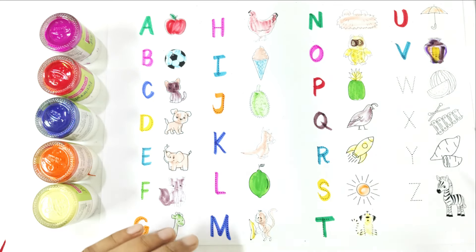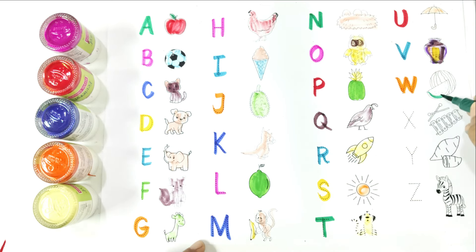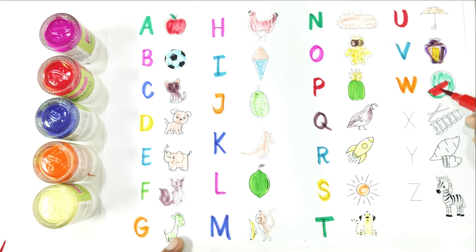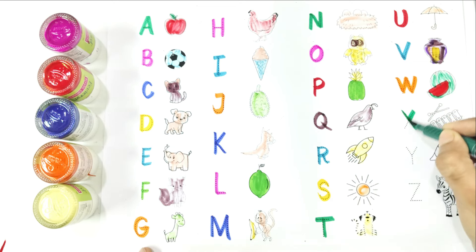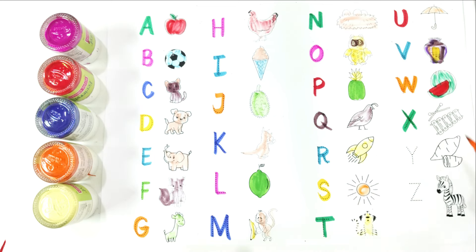Write with me. W — W is for watermelon. Again, say with me: W is for watermelon. Write with me. X — X is for xylophone. Again, say with me: X is for xylophone.